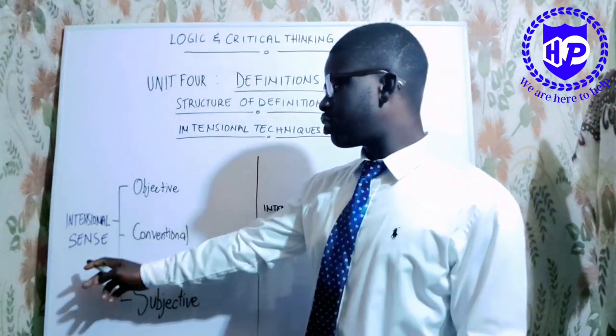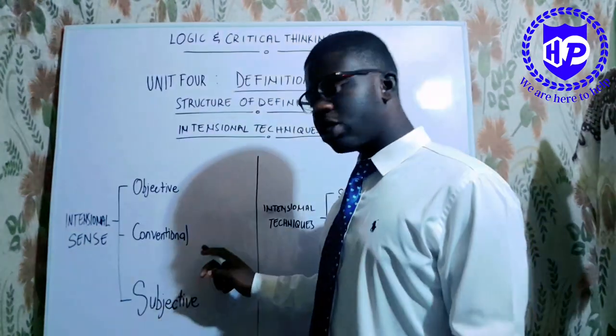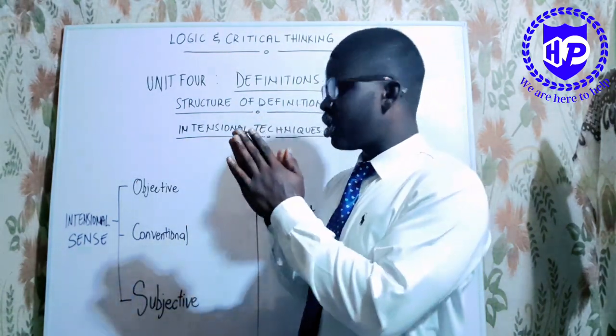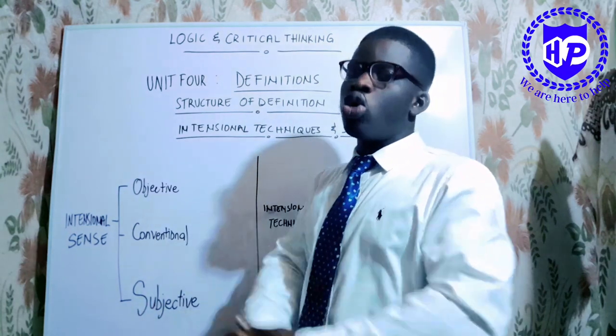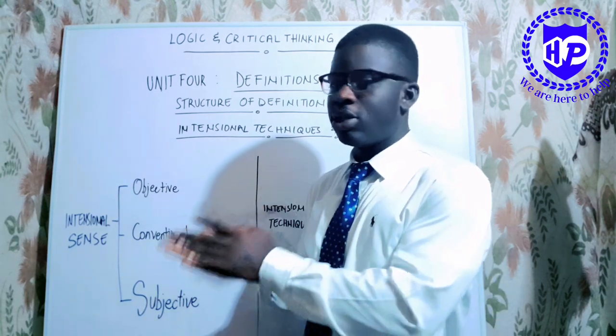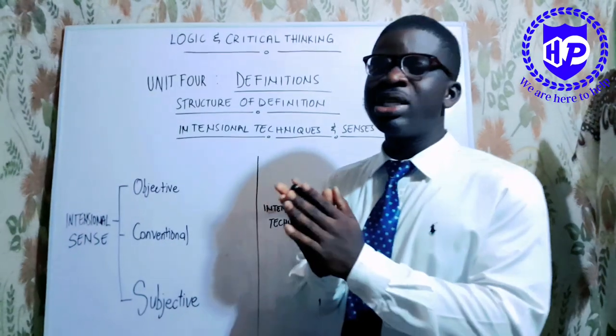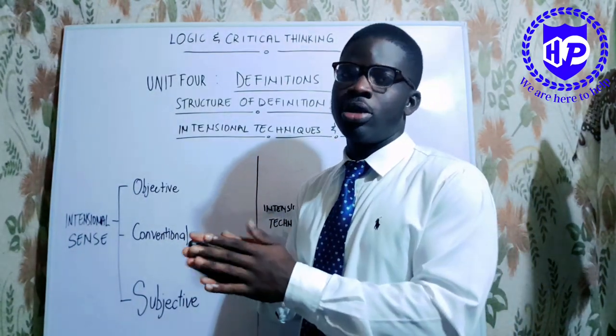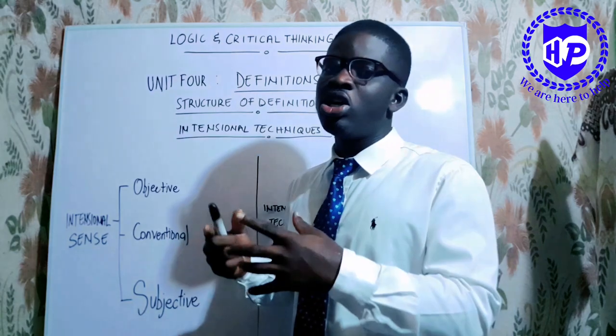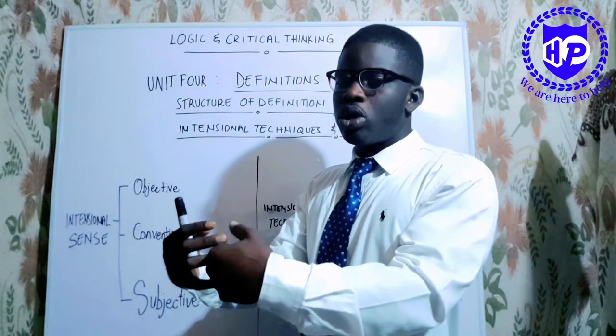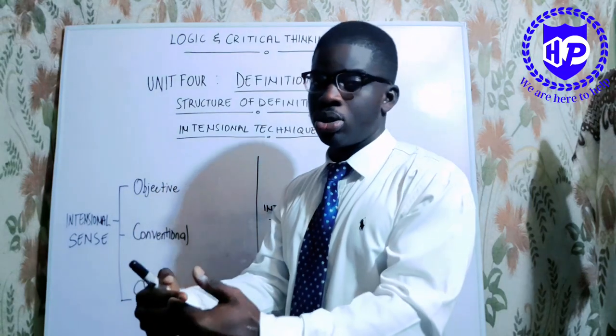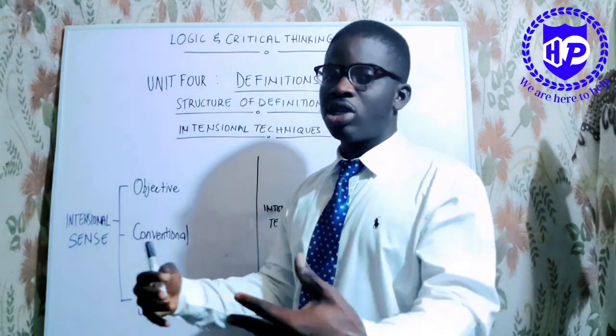Now, definition and difference is going to form the last part of our video. So we'll talk about that now. Intentional sense. We have objective, conventional, and subjective. With the objective sense, it's simply referring to all the objects that possess the qualities that have been listed in the intension. With the conventional sense, it's simply the objects that are generally accepted. And then subjective sense is referring to the person who is making a definition, what they believe or what they feel.